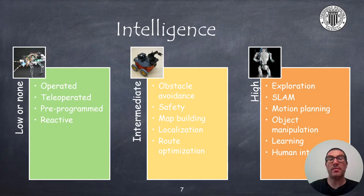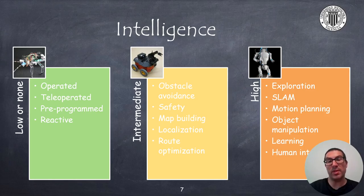Robots can have different degrees of intelligence. There are robots with low or no intelligence, such as those using teleoperation applications, those that have fixed or repetitive programs with no awareness that the environment can change — that is, they are used in structured environments — or those that have primitive intelligence, reacting to changes in the environment acting basically as a bug.